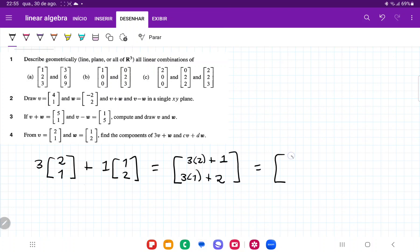And so this is going to give us, let's see, that's going to be 7 on top, and on the bottom it's going to be 3 plus 2, which is 5.